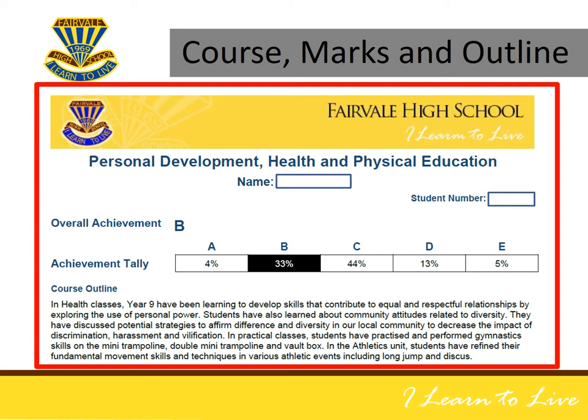Underneath the overall achievement grade is a bar that is broken up into five sections, one section for each of the five grades A through to E. In each of these sections, you will notice a percentage. This percentage informs parents of how all students who studied this particular course went in their studies in comparison to the outcomes. For example, in this subject, 4% of students achieved an A grade and 33% of students achieved a B grade and so on.